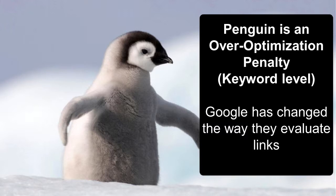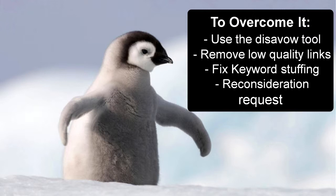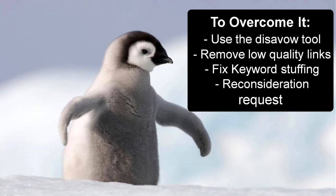Google doesn't care if the way you did it was legal at the time — when they change their rules, that's what they care about. It's not necessarily fair, but that's how it is. If you've dropped off for certain terms, you can use the Google Disavow Tool to find which links Google doesn't like and remove the low-quality ones. It's not always easy because those links are on sites you don't control. You should also fix keyword stuffing — if you're repeating 'Plumber Melbourne' over and over throughout the page, clean it up and write naturally. Don't write for the search engine.